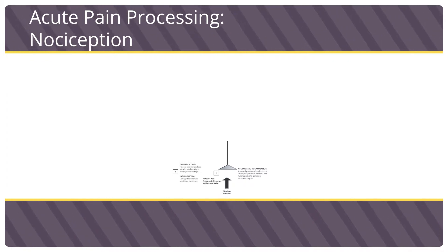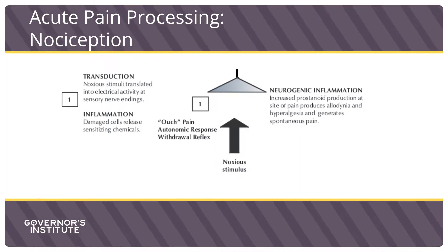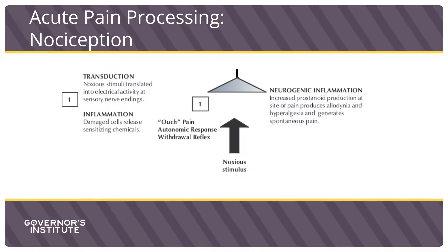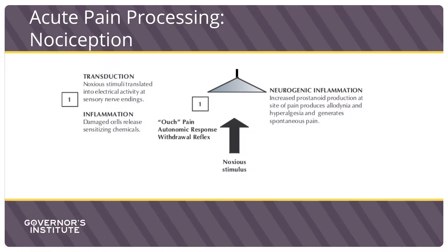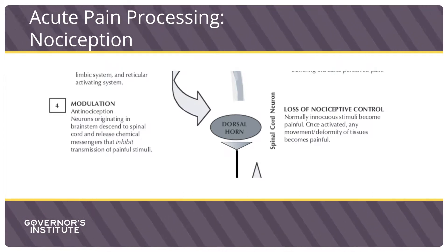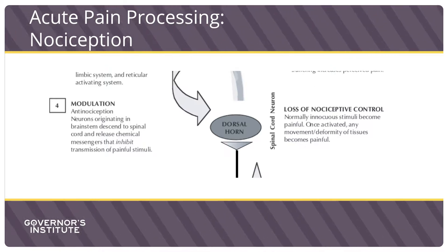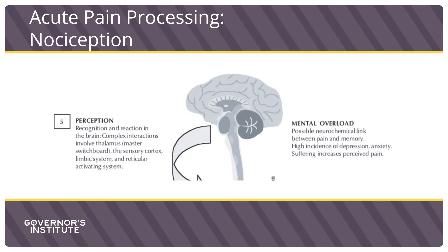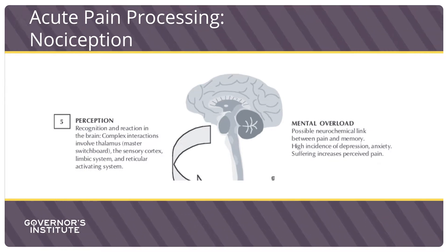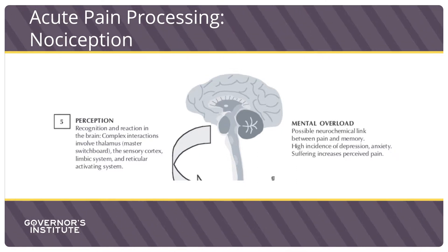To understand how acute and chronic pain differ, I'll briefly review acute pain processing, also known as nociception. Acute pain starts with an injury or noxious stimulus at the sensory nerve ending, causing inflammation. The stimulus is translated into an electrical message which is conducted along the neurons. Modulation then occurs, which blocks transmission of painful stimuli by neurons originating in the brain stem — this is known as anti-nociception. Finally, there's perception, which is very complex and involves several areas of the brain, including the thalamus, sensory cortex, limbic system, and reticular activating system.